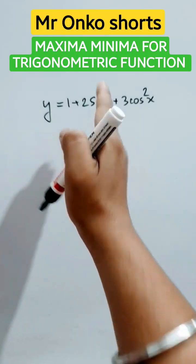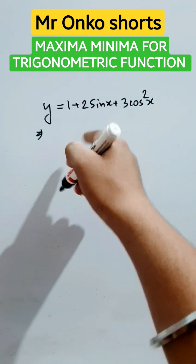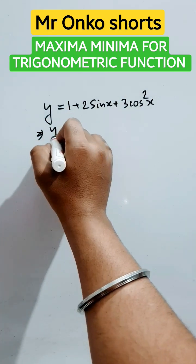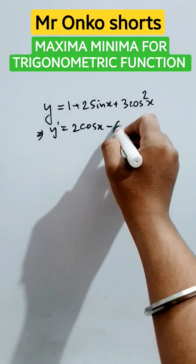Hello students, welcome to Mr Onko shorts. Let's learn how to find the value of x for which this will have max or min value. So first take that derivative. First derivative: it will be 2cos x - 6cos x·sin x.